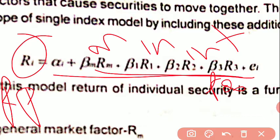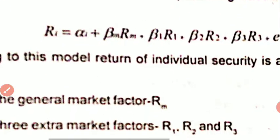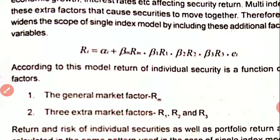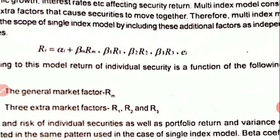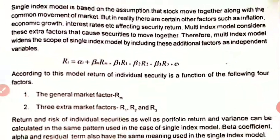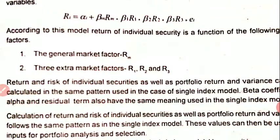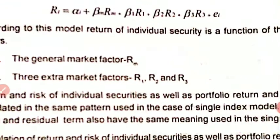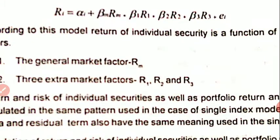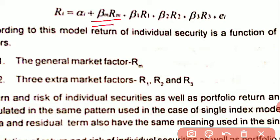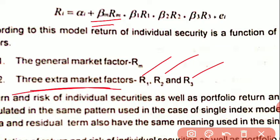According to this model, the return of an individual security is a function of the following factors. The first is general market behavior — the risk-free rate plus the extra market return — which is added to your return. It can be positive or negative.